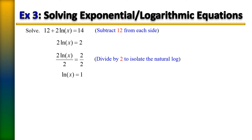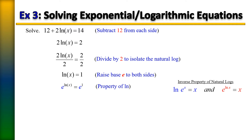Recall that the natural log has a base of e. Since the left side has a base of e, so does the right. We raise both sides as an exponent of e. By the inverse property of natural logs, e to the ln cancels out to 1, leaving us with x equals e to the first power.